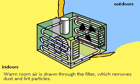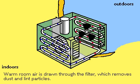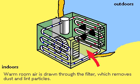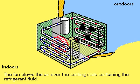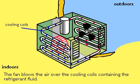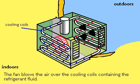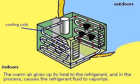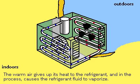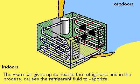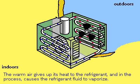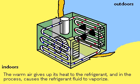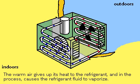Warm room air is drawn through a dust filter by a fan, then blown over the cooling coils, which circulate the refrigerant in its liquid state. As the room air flows by the coils, it causes the liquid in the coils to evaporate, and in the process, heat is absorbed by the refrigerant as it turns to gas. The cooled air is blown back into the room.